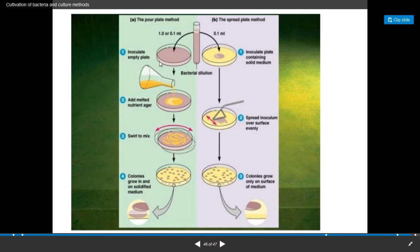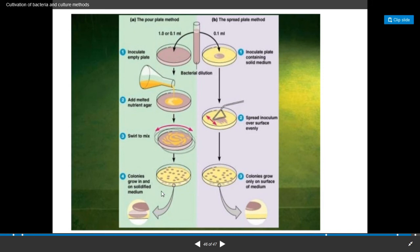This is the diagram of the pour plate method. Here you can see the bacterial inoculation or dilution. Then 1 ml or 0.1 ml of culture is added to the plate. The molten nutrient agar is added to that plate containing the suspension, or the suspension can be added directly into the medium and poured into the sterile petri plate. These plates are rotated to mix the culture with the nutrient medium. The plates are then incubated at 37°C for at least 24 hours. After incubation, separated colonies appear in the nutrient agar plate. This is the pour plate method.